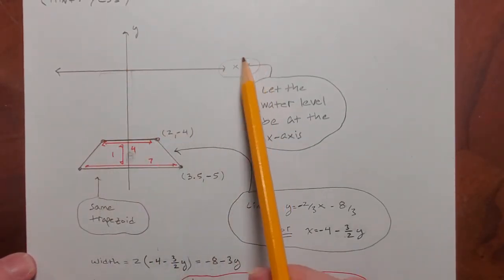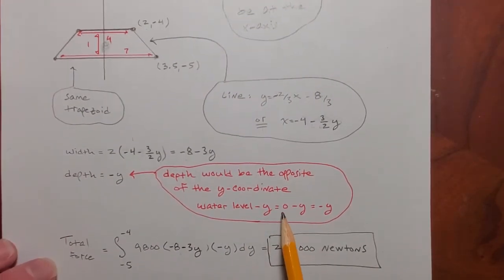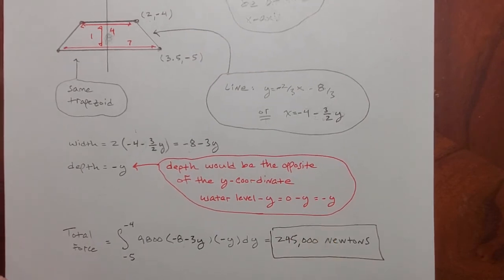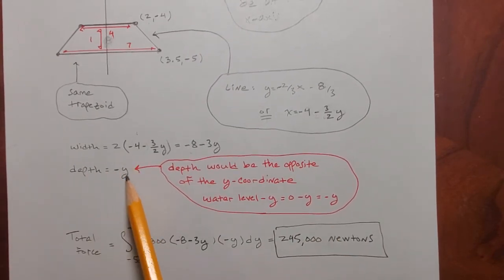what's the y-coordinate on the x-axis? Zero. Okay. Zero minus y, which is just negative y, which, I mean, of course, that would work.